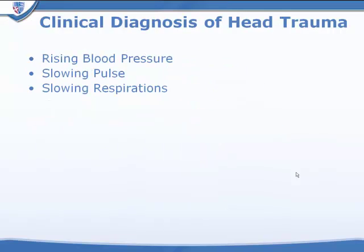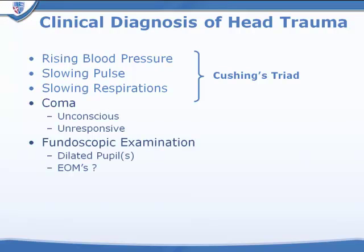Let's talk about who needs brain imaging. The clinical diagnosis of head trauma has traditionally been based on rising blood pressure, slowing pulse, and slowing respirations — all signs of increased intracranial pressure — described as Cushing's Triad. We also know that patients who have an acute neurologic emergency, patients in coma who may be unconscious or unresponsive, and patients who have an abnormal fundoscopic examination such as paralysis of extraocular muscles or a dilated pupil indicating a third cranial nerve problem should receive imaging.